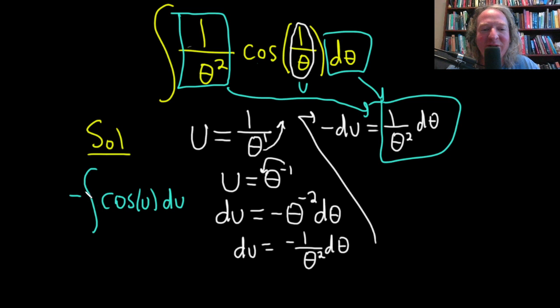And that's equal to negative du, which I've put out here. Or here. You see it here. And then it's just cosine of u.